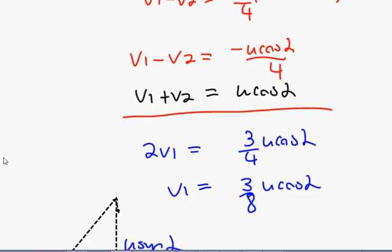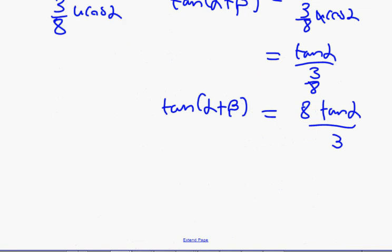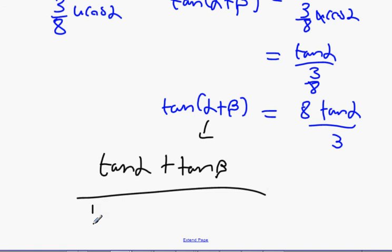Now we have to find this one on its own. So what we're going to do is use the tan A plus B formula. So we're going to have tan alpha plus tan beta divided by 1 minus tan alpha tan beta equals 8 tan alpha over 3.